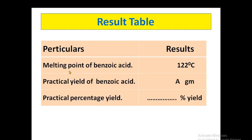Finally, record all results: the melting point of benzoic acid is about 120 to 122 degrees Celsius, the practical yield of benzoic acid is 'a' grams, and the practical percentage yield is calculated from the formula. In this way we can complete this practical — the conversion of ethyl benzoate to benzoic acid.